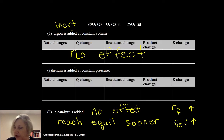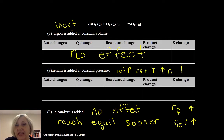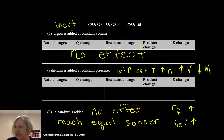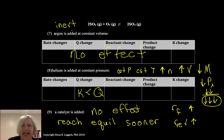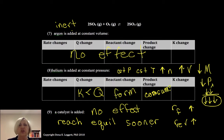Helium added at constant pressure is a little trickier. At constant P and T, if we increase moles of gas, we need a flexible container, and volume increases. An increase in volume decreases molarity and partial pressures. In our example, the denominator decreases more than the numerator, so Q becomes greater than K — we have too much product. Therefore, the system shifts to consume product and form reactant, shifting to the reactant side.